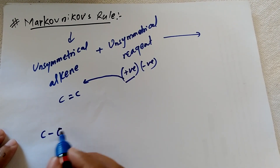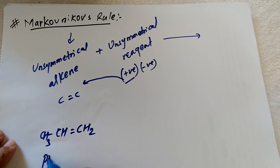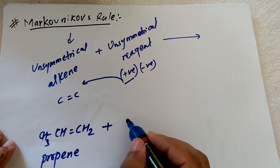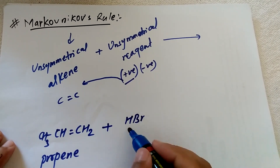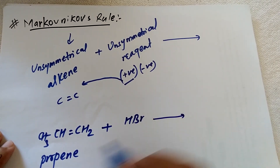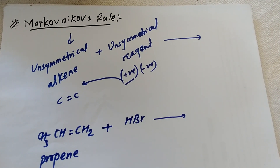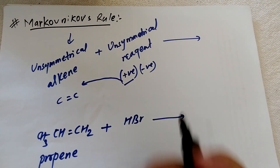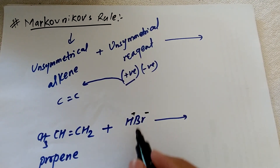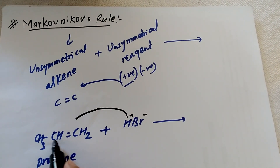Let us take an example. The unsymmetrical alkene I am taking is CH3-CH=CH2, which is propene. The unsymmetrical reagent we normally use is HBr or HCl. The positive part of the reagent is H+ and the negative part of the reagent is Br−. The positive part of the reagent bonds with that double-bonded carbon atom.